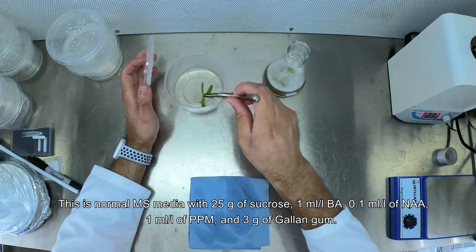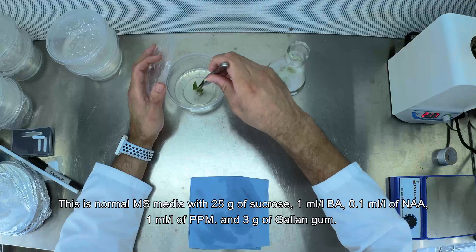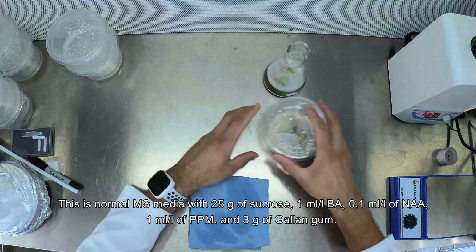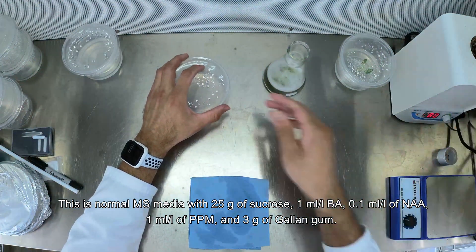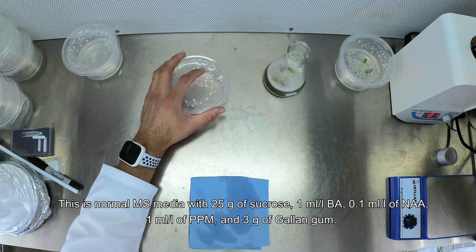1 ml per liter of BA, 0.1 ml per liter of NAA, 1 ml per liter of PPM, and 3 grams of gellan gum.